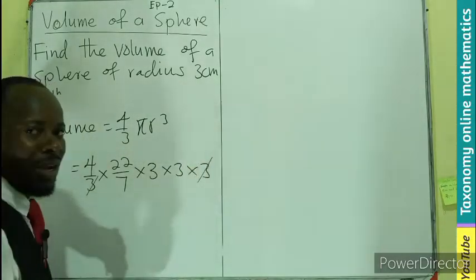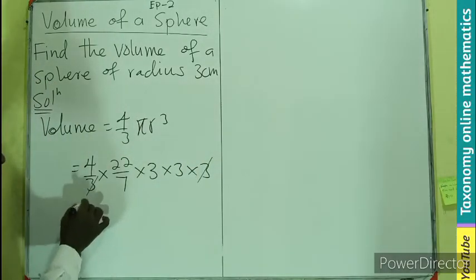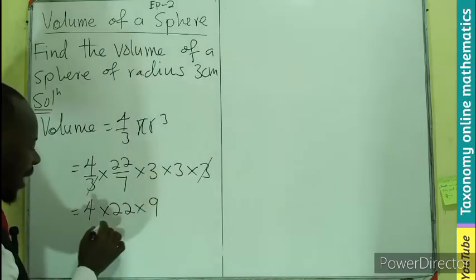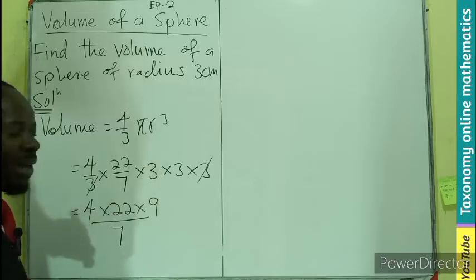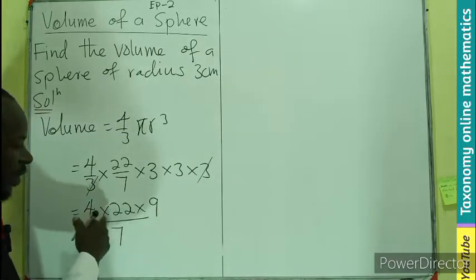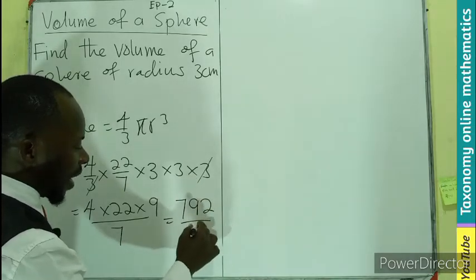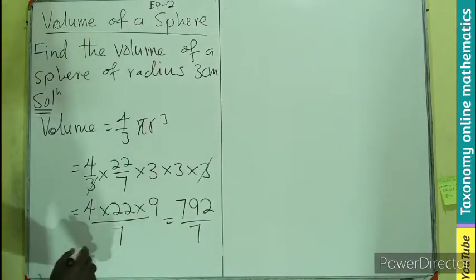We are left with only 4 times 22 times 3 times 3, which would be 9, divided by 7. When you multiply this, you have 792 divided by 7.